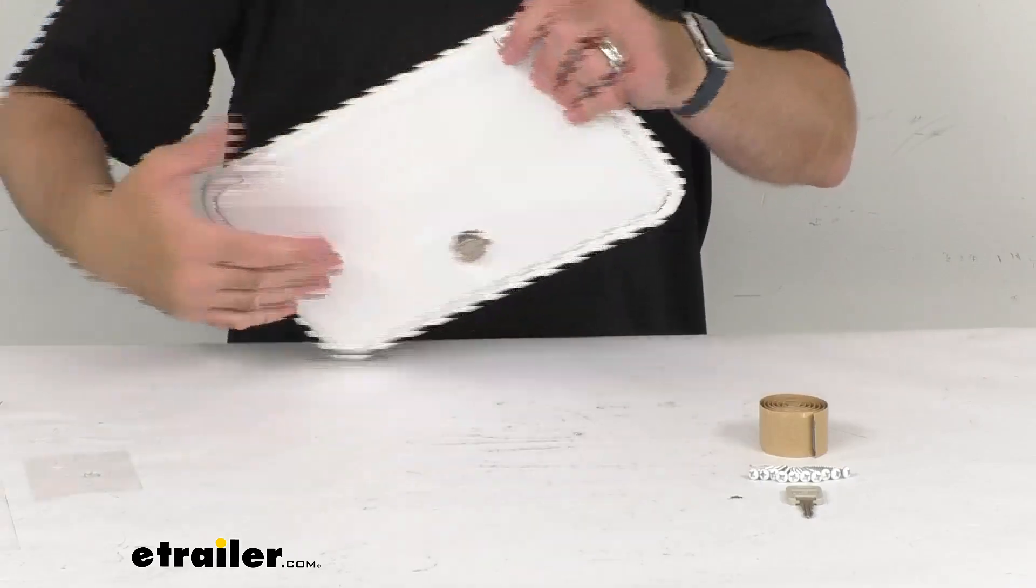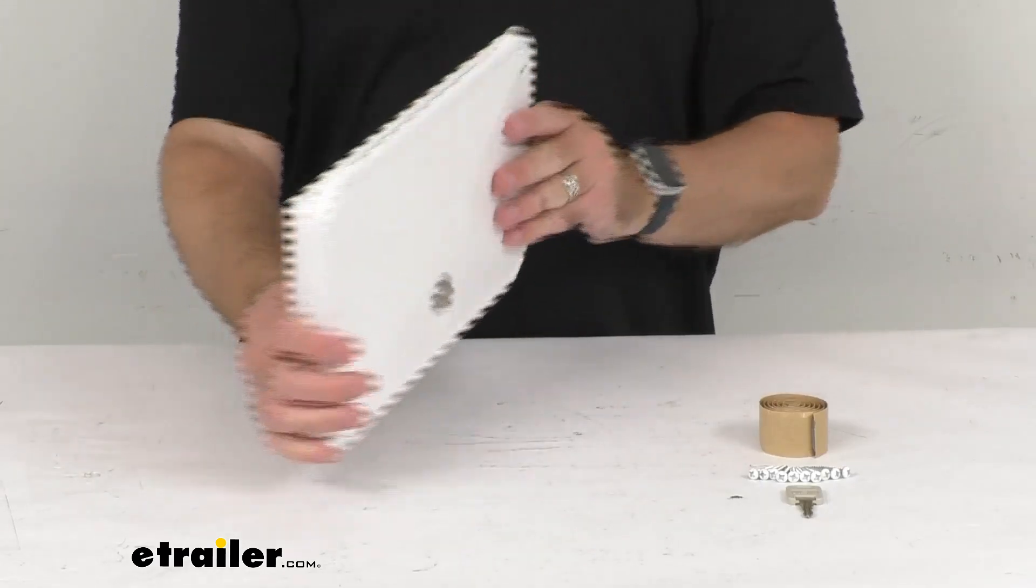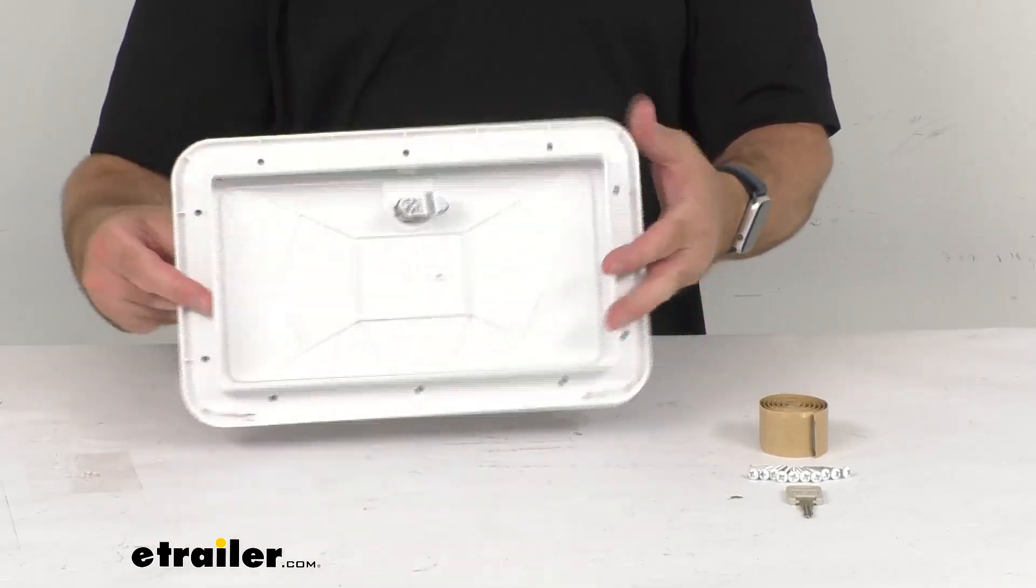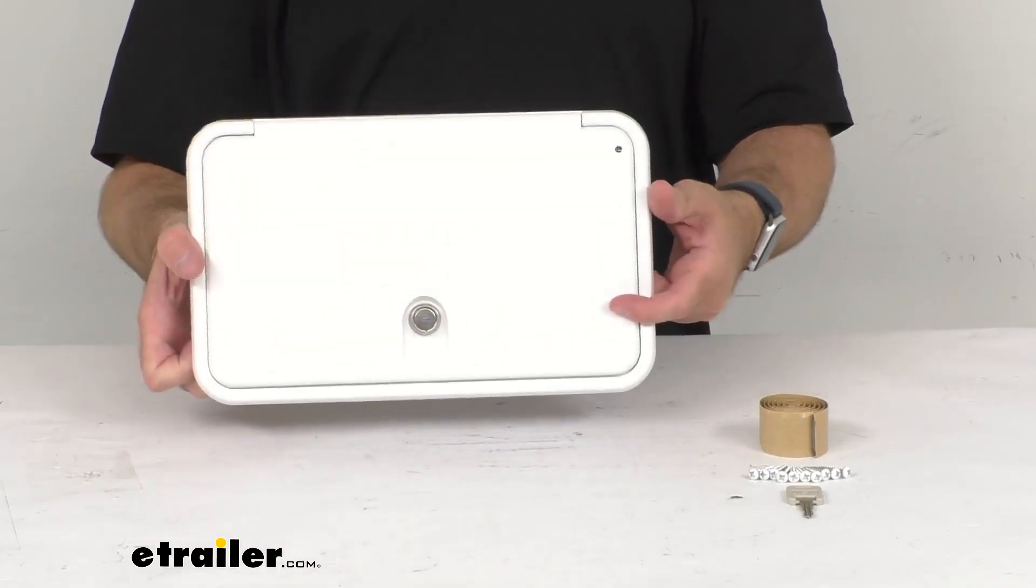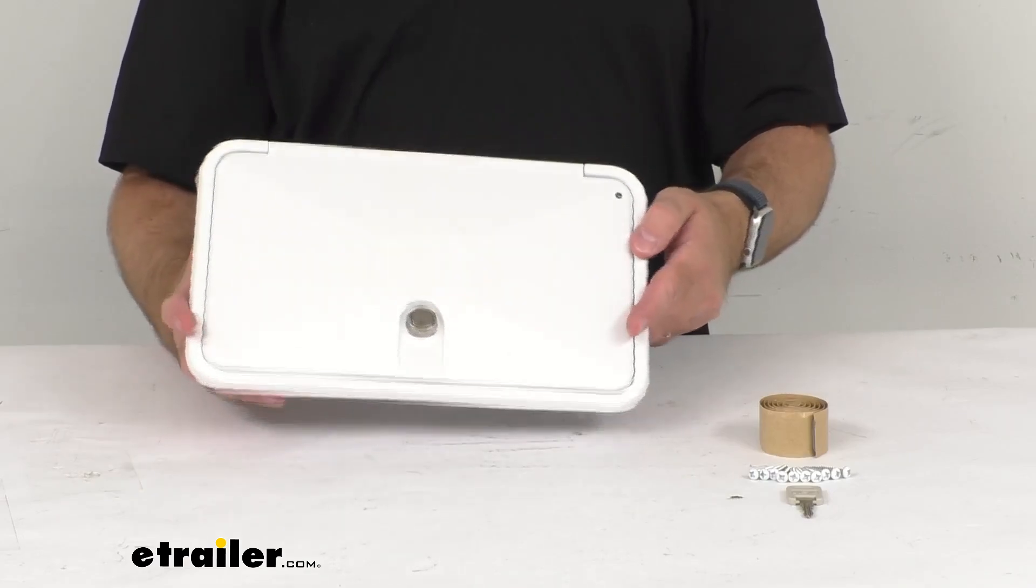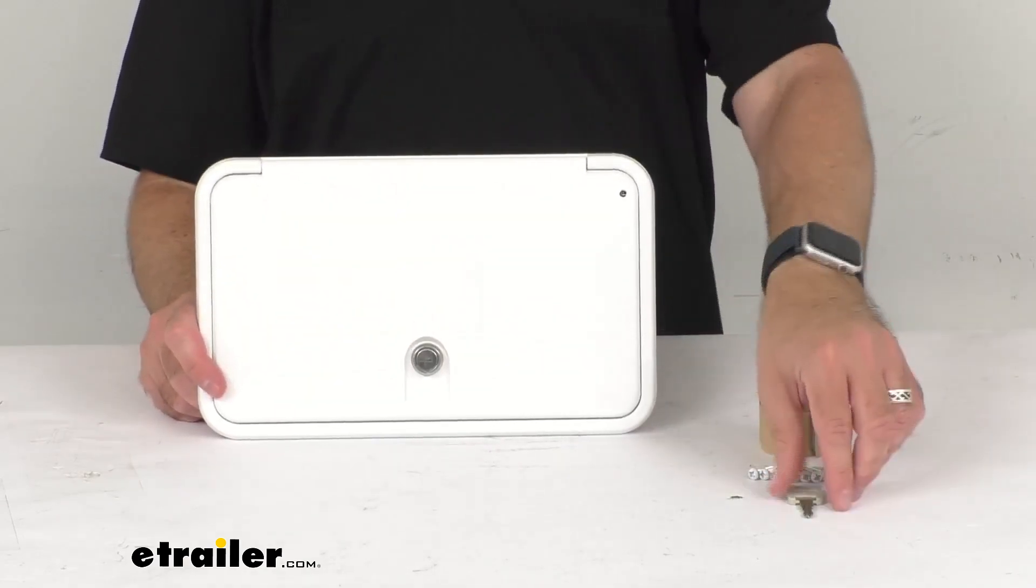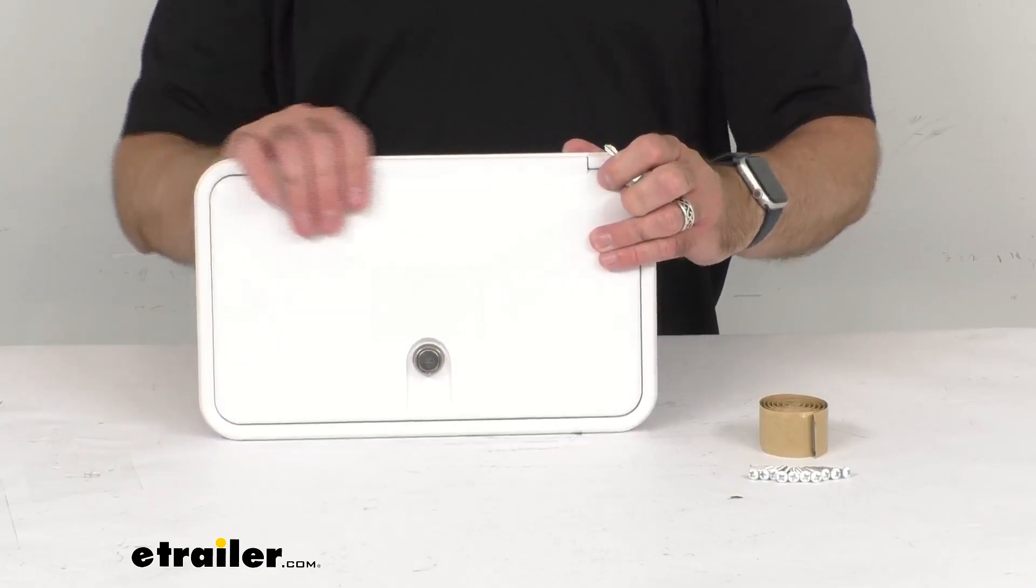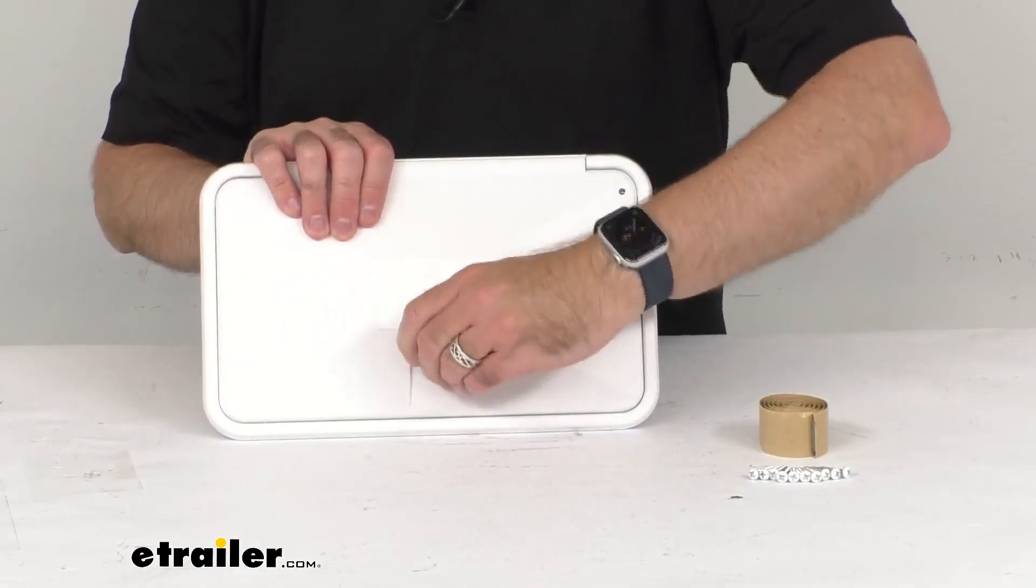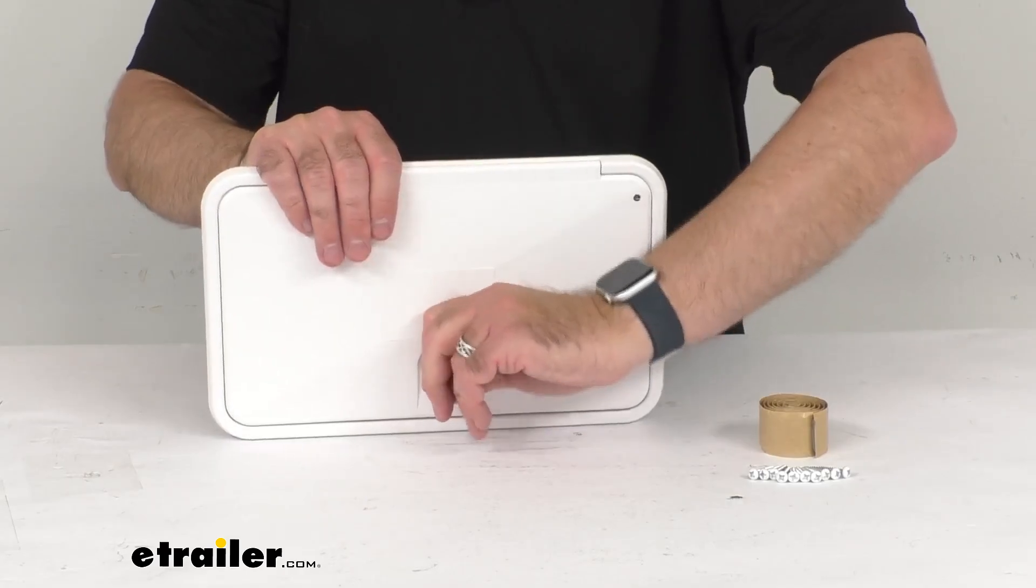This is made in the USA of UV-stabilized plastic, so it won't fade or yellow. It does a great job resisting road salt and holds up really well to the elements it's constantly exposed to. It includes a key so you can lock it.